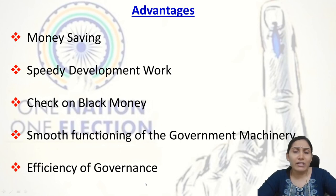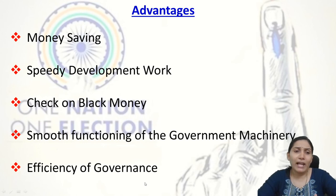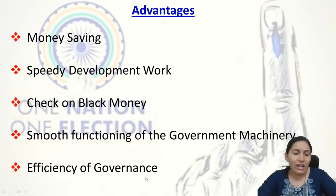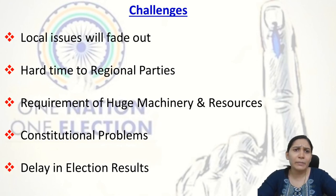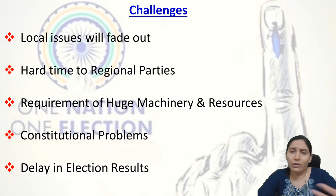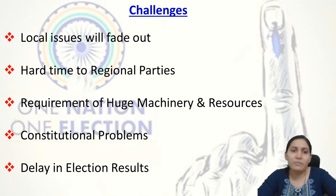The advantages of One Nation One Election include saving money, speedy development work, a check on black money, smooth functioning of government machinery, and improved efficiency of governance. The challenges include that local issues may fade out, it will be a hard time for regional parties, it will require huge machinery and resources, there are constitutional amendment requirements, and there can also be delays in election results.